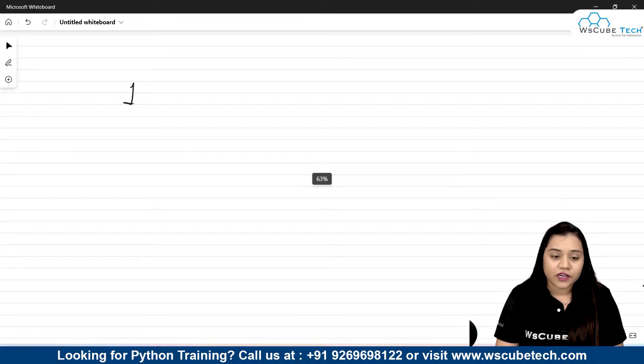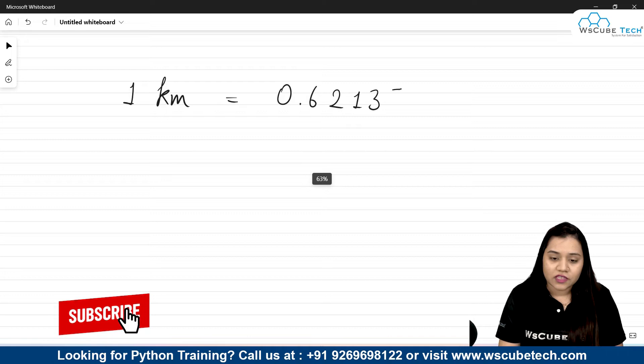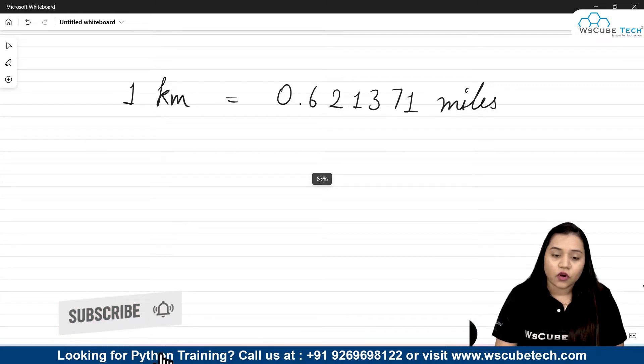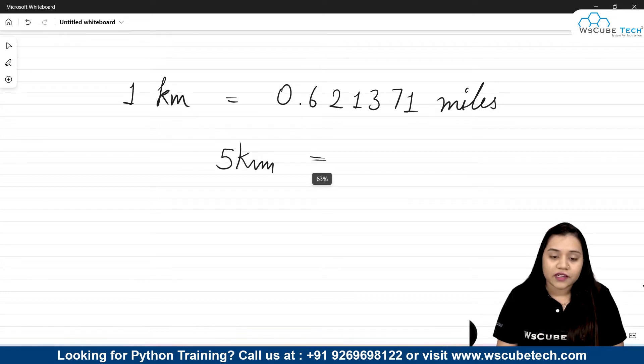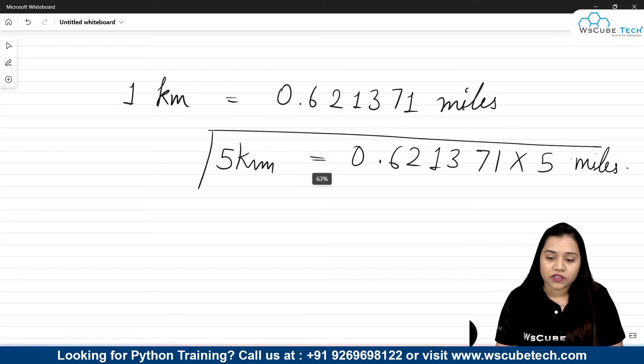As I said, one kilometer equals 0.621371 miles. If we have a value in kilometers, suppose someone says five kilometers and we want to convert it into miles, then we need to multiply it with 0.621371. Five multiplied by 0.621371 will give us the value in miles. This is what we are going to do, so using this formula we will be converting kilometers to miles.